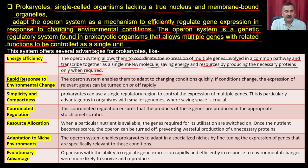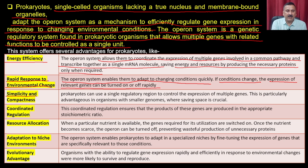The operon system enables bacteria to adapt to changing conditions quickly — if conditions change, expression of the relevant gene can be turned on or off rapidly. It is also simple and compact: prokaryotes can use a single regulatory region to control expression of multiple genes. This is particularly advantageous in a small genome where saving space is crucial. The bacterial system must conserve energy and space, and operons allow it to control multiple genes efficiently.